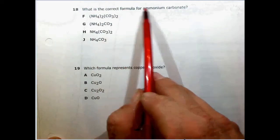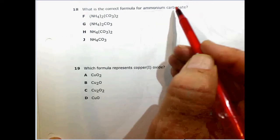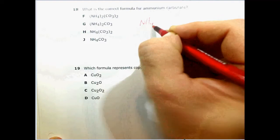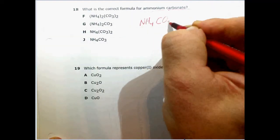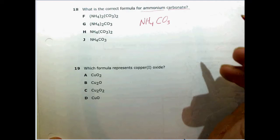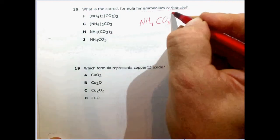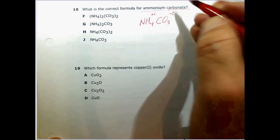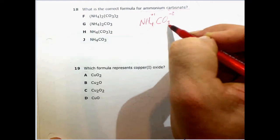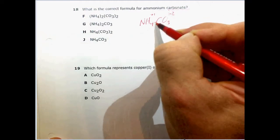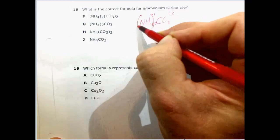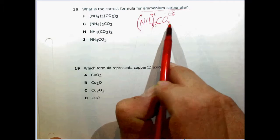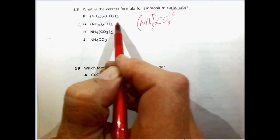What is the correct formula for ammonium carbonate? Again, we have polyatomic ions. Ammonium is NH4, carbonate is CO3. What we have to do is check the charges. We find that carbonate is negative 2 and ammonium is plus 1, so we have to crisscross. We take this 2 and we'll put it down here after putting the NH4 in parentheses, so (NH4)2CO3 is the correct answer. That's G.